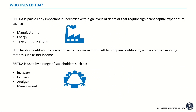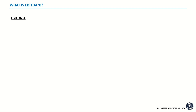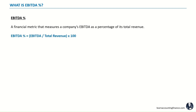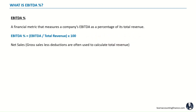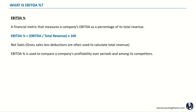The problem, however, is it's not easy to answer all the questions, especially when it gets into price volume mix and the percentage changes. Let's also take a look at EBITDA percent, also known as EBITDA margin. EBITDA percent is a financial metric which shows EBITDA as a percentage of its total revenue. The formula is EBITDA divided by total revenue times 100, reflected in percentage terms. Total revenue is often indicated by gross sales less any sales deductions. It's similar to gross margin — except that in gross margin you have gross profit divided by total revenue, whereas in EBITDA percent it's EBITDA divided by total revenue.